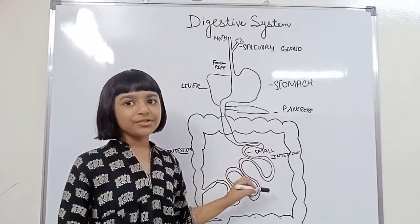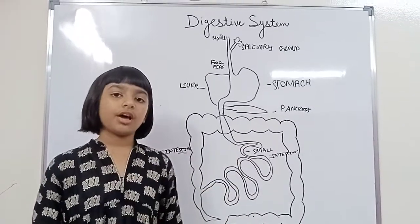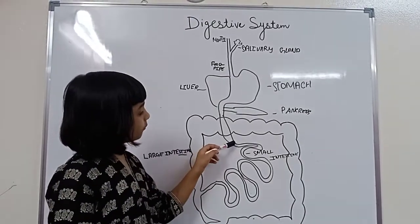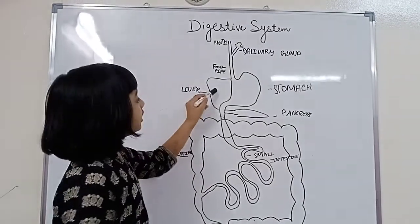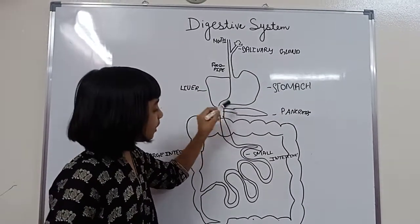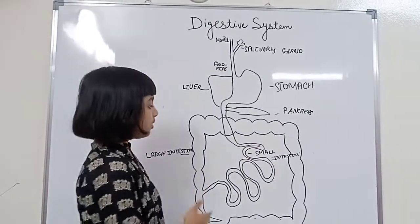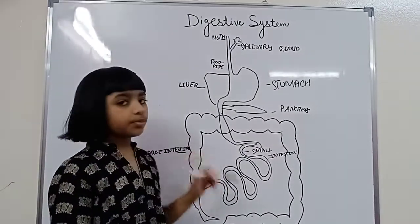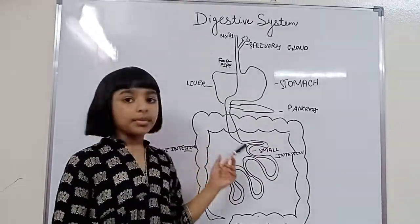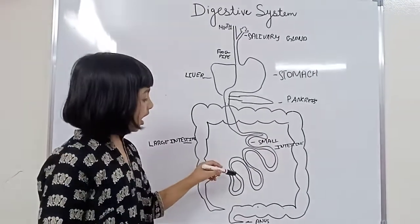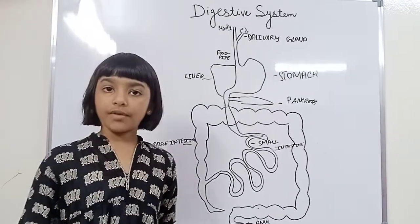Then it will go to the long coil tube, the small intestine, where all the digested food is absorbed. The walls of the small intestine will produce a juice. The liver and pancreas will pour their juice into the small intestine and it will mix with the food. The walls of the small intestine have blood vessels which will absorb our digested food and pass it to all parts of our body.